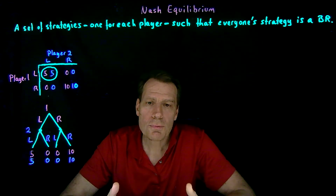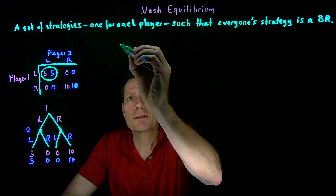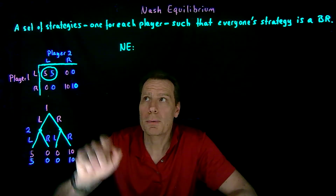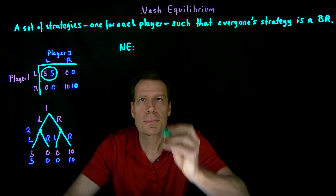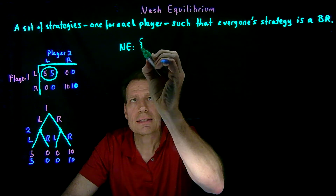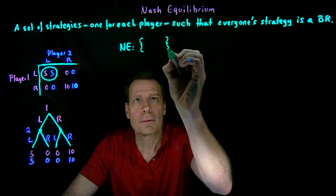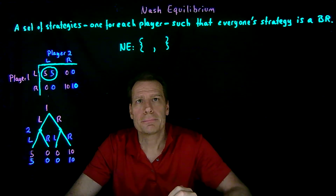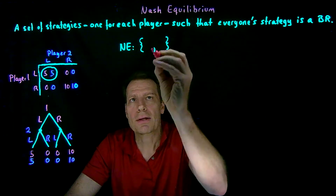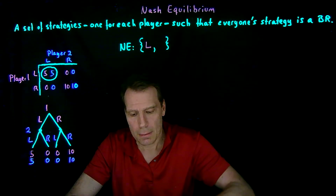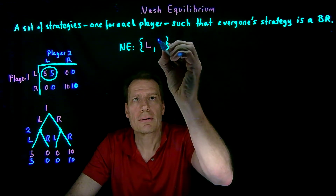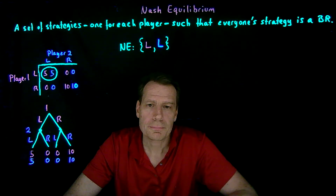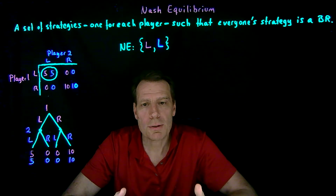The way we write that Nash equilibrium is as a set of strategies, one for each player. Player one's strategy is left, and player two's strategy is left, such that they're best responding to each other.